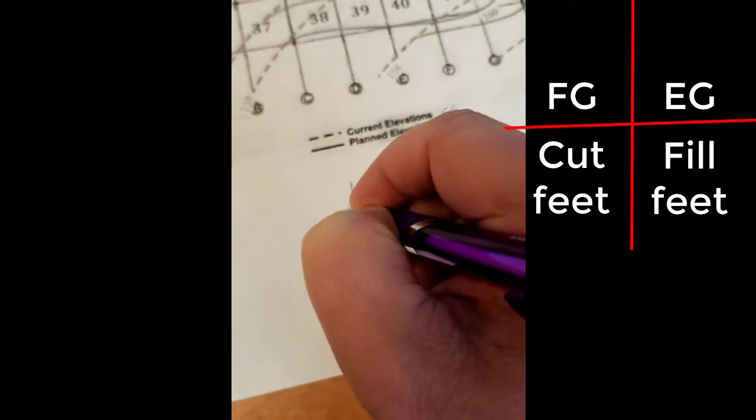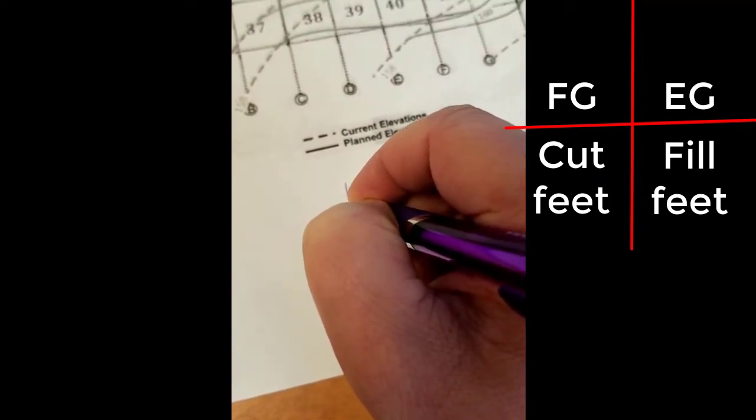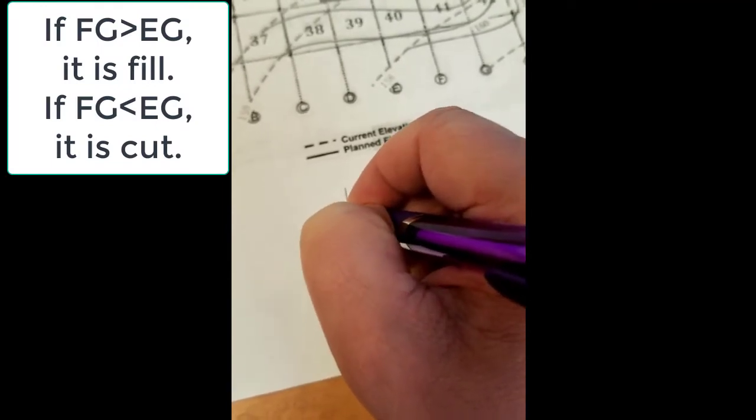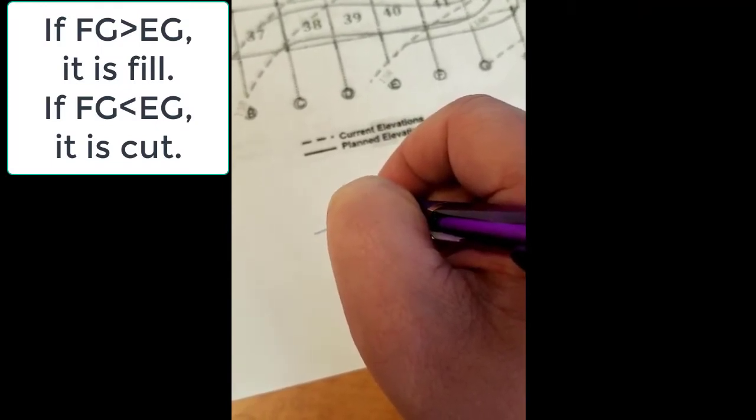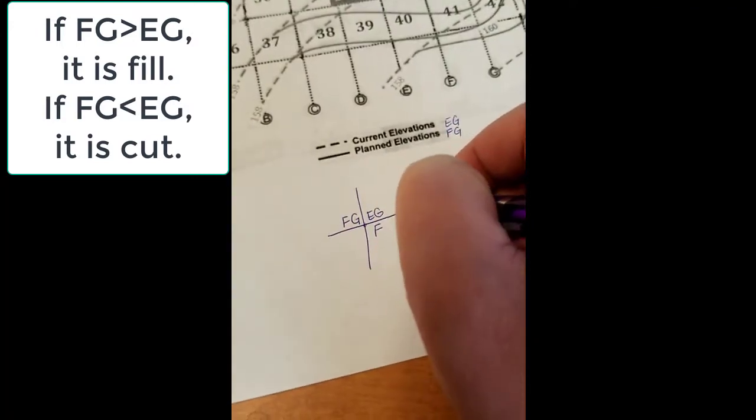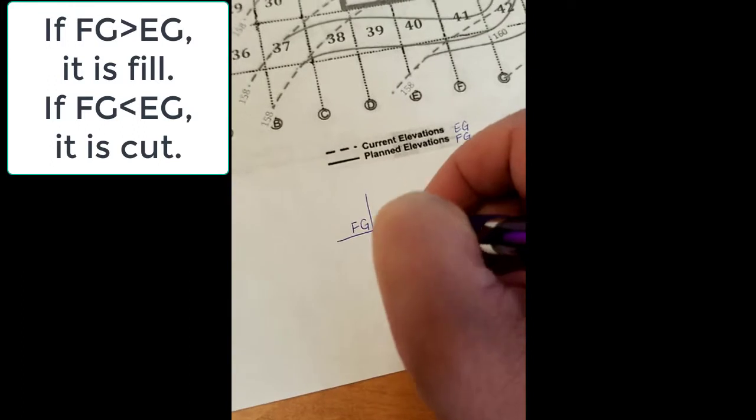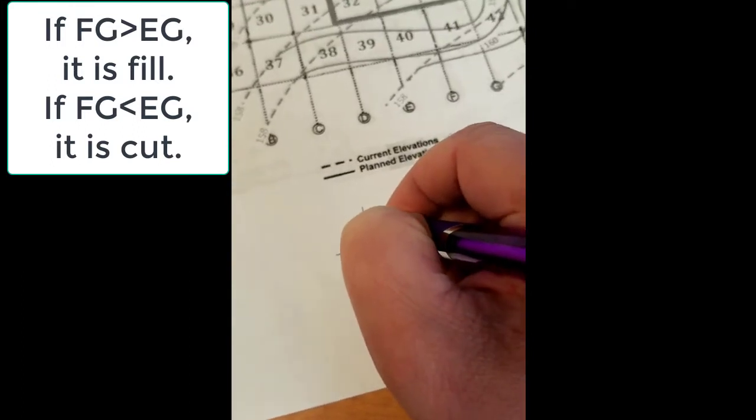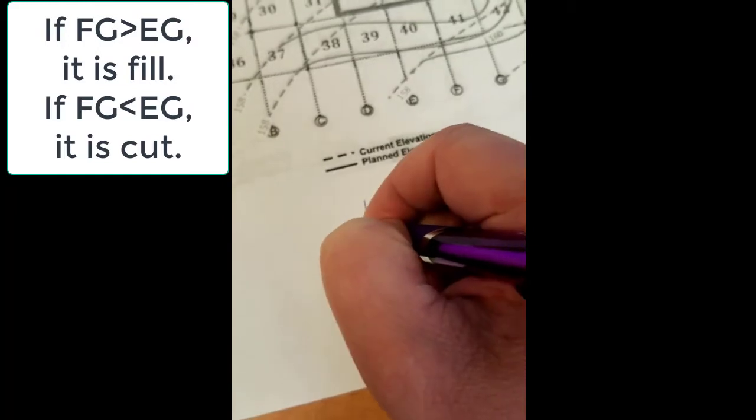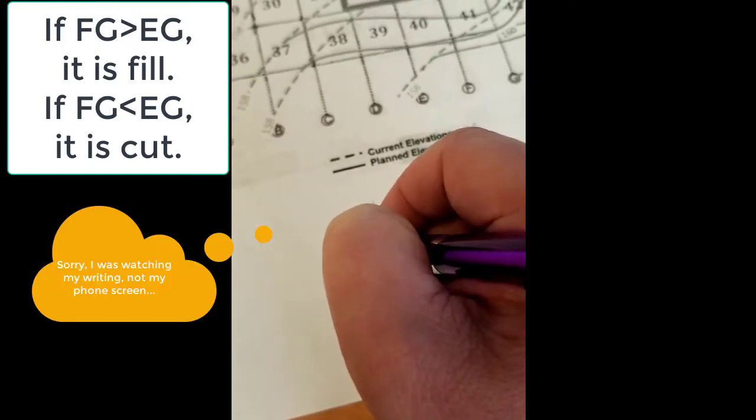If the finished ground is larger, is taller, in other words is a higher elevation than the existing ground, then you would need to fill. If the existing ground is deeper than finished ground, in other words you want to lower the elevation, you're going to need to cut.